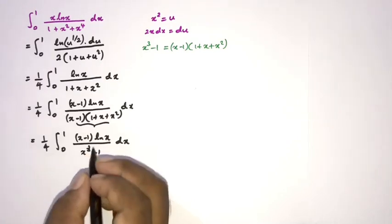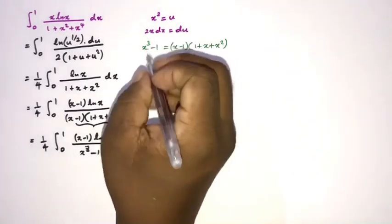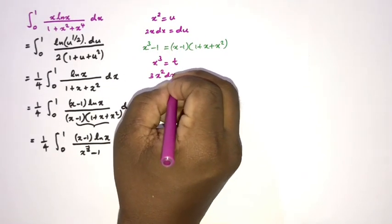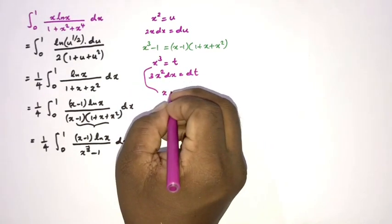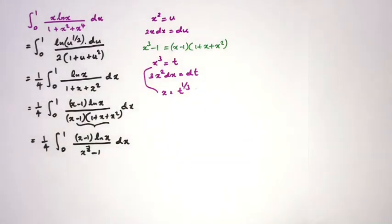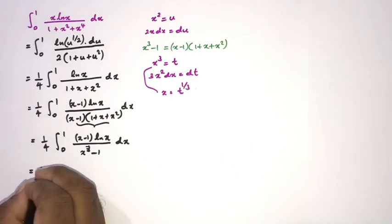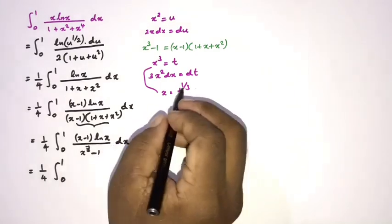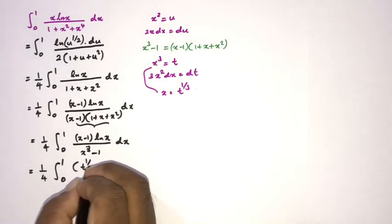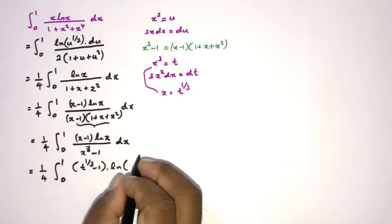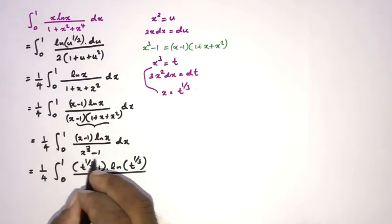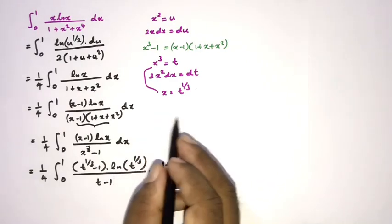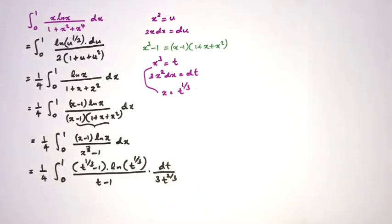In the denominator we have x³, so we take another substitution: x³ = t. Differentiating gives 3x² dx = dt, and we can isolate x as t^(1/3). Plugging in, the limits remain 0 to 1. Then x − 1 becomes t^(1/3) − 1, ln(x) becomes ln(t^(1/3)), x³ − 1 becomes t − 1, and dx becomes dt over (3x²) = dt over (3t^(2/3)).